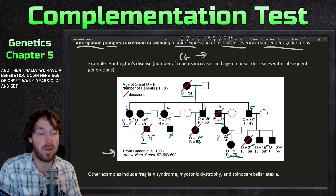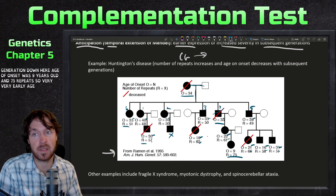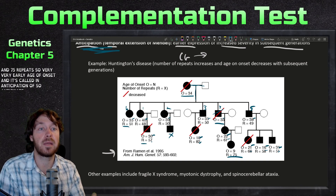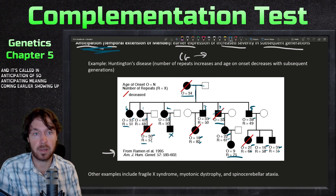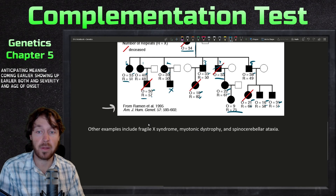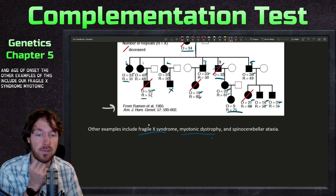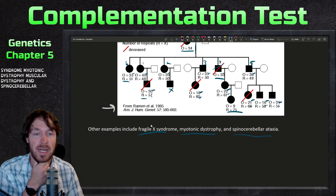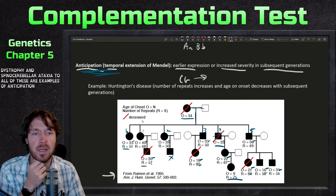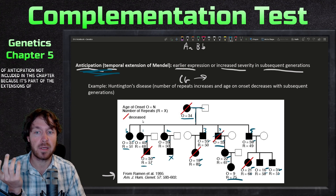Finally, one individual in the last generation had an age of onset of just nine years old, with 75 repeats — a very early age of onset. This is called anticipation: coming earlier, showing up earlier, both in severity and age of onset. Other examples include fragile X syndrome, myotonic dystrophy, muscular dystrophy, and spinocerebellar ataxia.